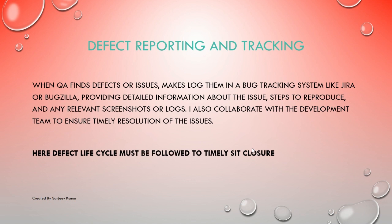The defect life cycle must be followed for timely closure. The life cycle starts from bug creation, then you assign it to the concerned person. If they agree it's a valid bug, they will fix it and assign it back to you to retest and close. Following this defect cycle helps close bugs in a timely manner, and you should report to the project manager on a daily basis so there is tracking to close those bugs and close the sprint on time.